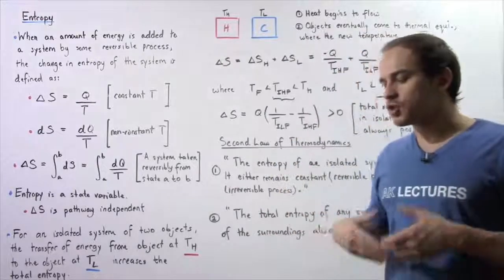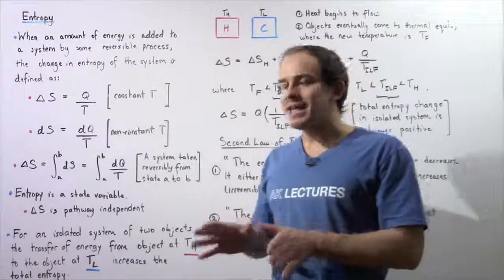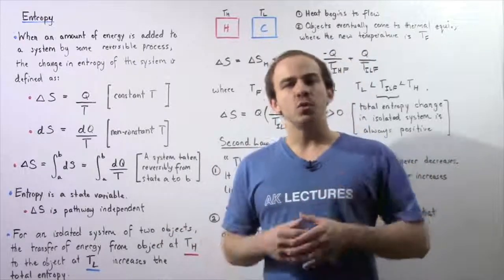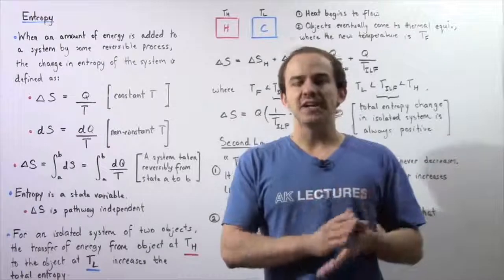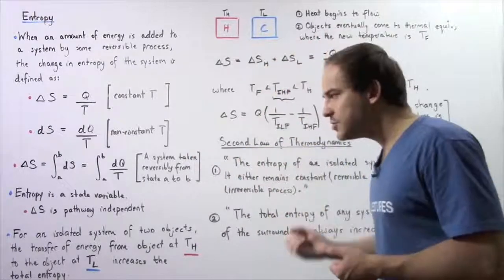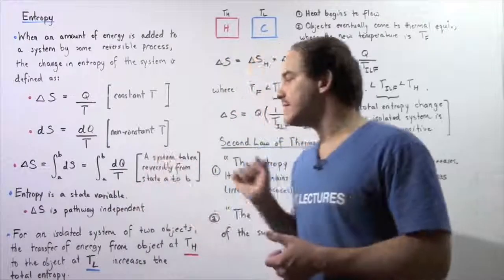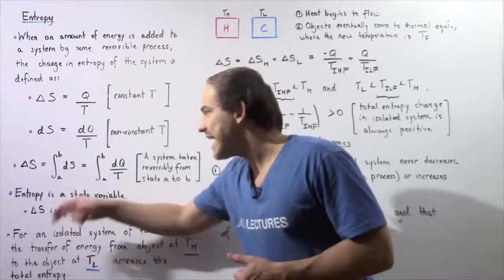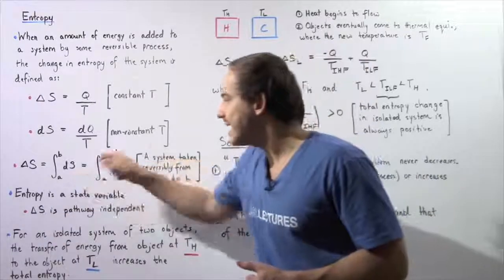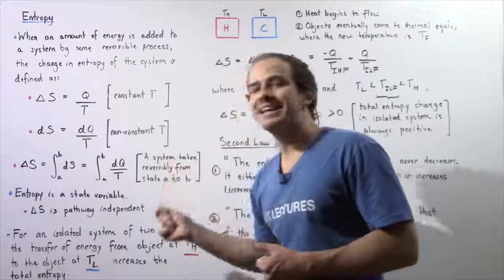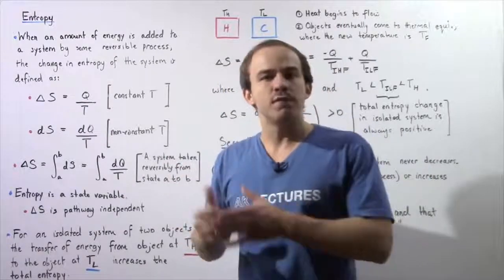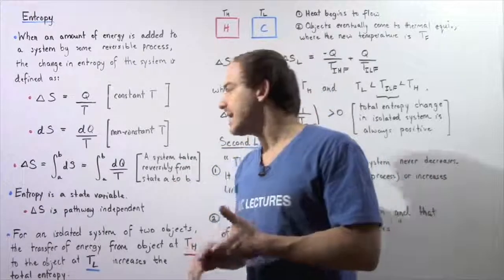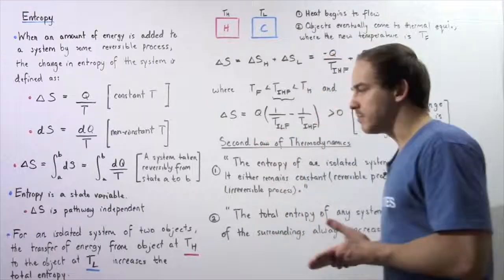In the next lecture, we're going to discuss the fact that entropy is a state variable — why it's a state variable and what a state variable is. In this lecture, we'll just mention that entropy is in fact a state variable. What that basically means is the change in entropy as we go from some state A to some state B is pathway independent — it doesn't matter how we go from A to B, the change in entropy will always be the same.